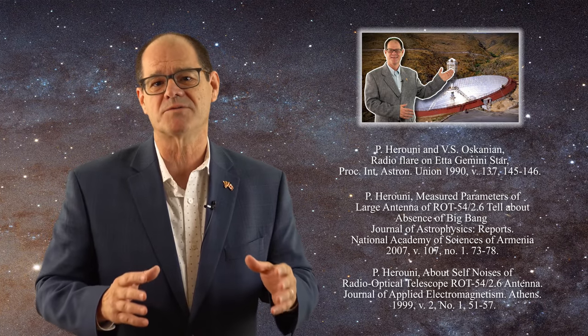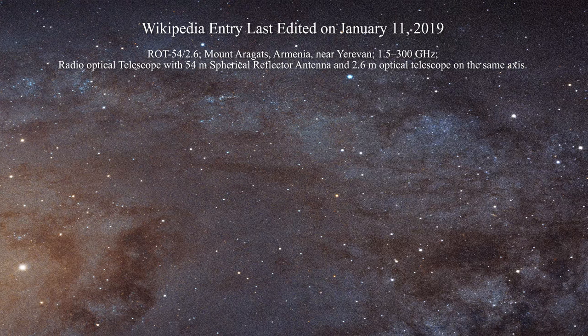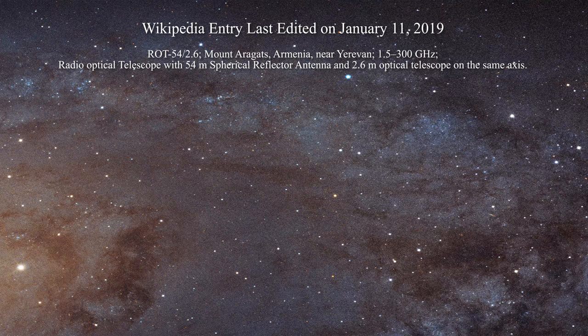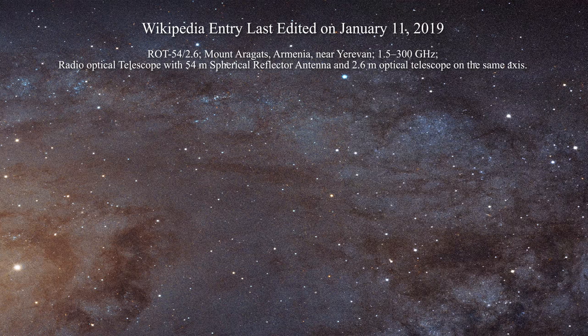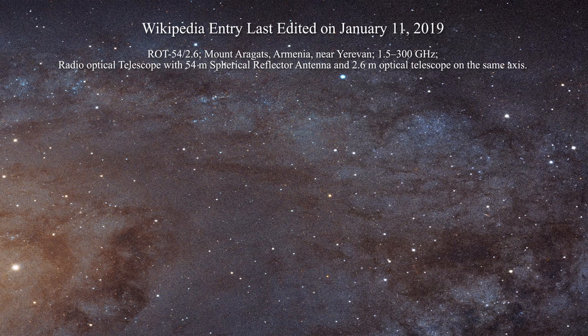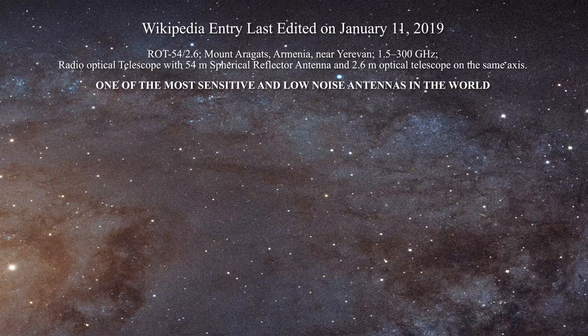In any case, the device was clearly operational. Now here is something to catch your interest. Wikipedia keeps a list of radio telescopes. If you examine the old records for this list, you will be able to read the following entry under Europe relative to Professor Harouni's antenna: 'ROT 54-2.6, Mount Aragats, Armenia, near Yerevan, 1.5–300 GHz radio-optical telescope with 54-meter spherical reflector antenna and a 2.6-meter optical telescope on the same axis.' And here is the key sentence: 'one of the most sensitive and low-noise antennas in the world.'